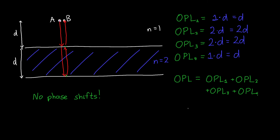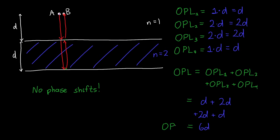The total optical path length is OPL1 plus OPL2 plus OPL3 plus OPL4, which equals D plus 2D plus 2D plus D, giving 6D. That's our final answer for the optical path length from point A to point B. It was a bit complicated, but once you break it into segments, it's fairly straightforward: compute each segment one by one, then add them all up to get your final answer.